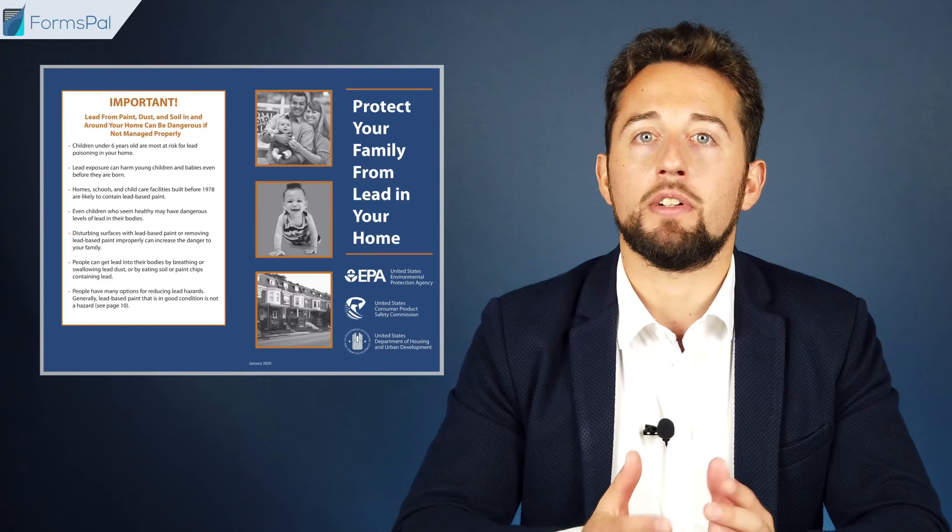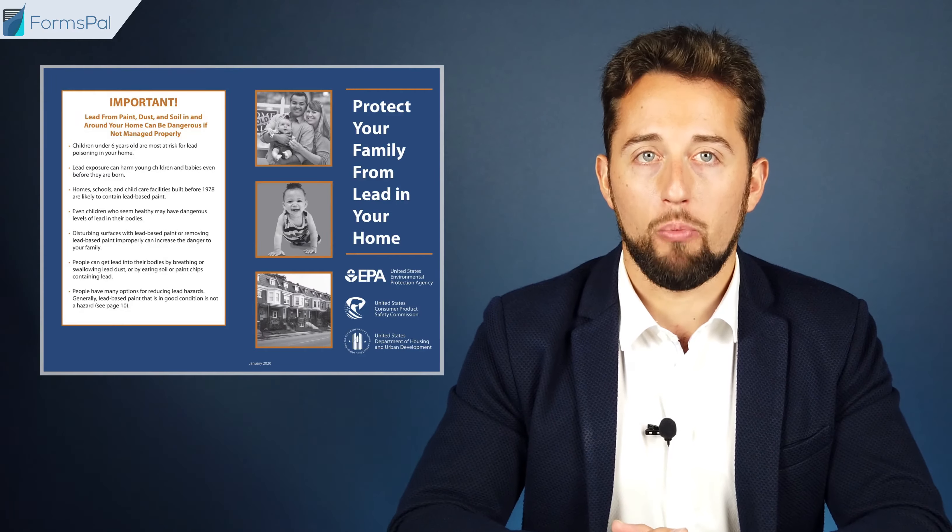There is one federal disclosure that works for all lease agreements in the United States. This is called the lead disclosure, and it requires the landlord to tell the tenant about all known lead paint hazards. They should also provide the state-approved version of the pamphlet, "Protect Your Family from Lead in Your Home." However, this requirement applies to not all types of residential dwellings.